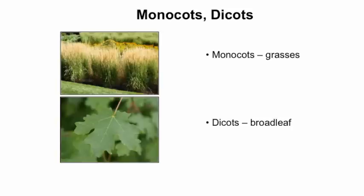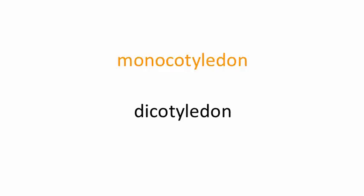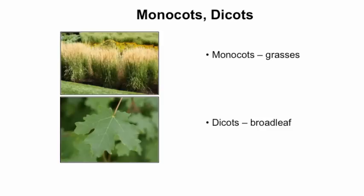Monocot plants are those that are usually grass-like, with long, spiky leaves, and dicot plants are those with broad leaves. The terms monocot and dicot are short for monocotyledon and dicotyledon. These refer to structures found within the seeds of these plants that help the food stored in the seed get into the embryo.